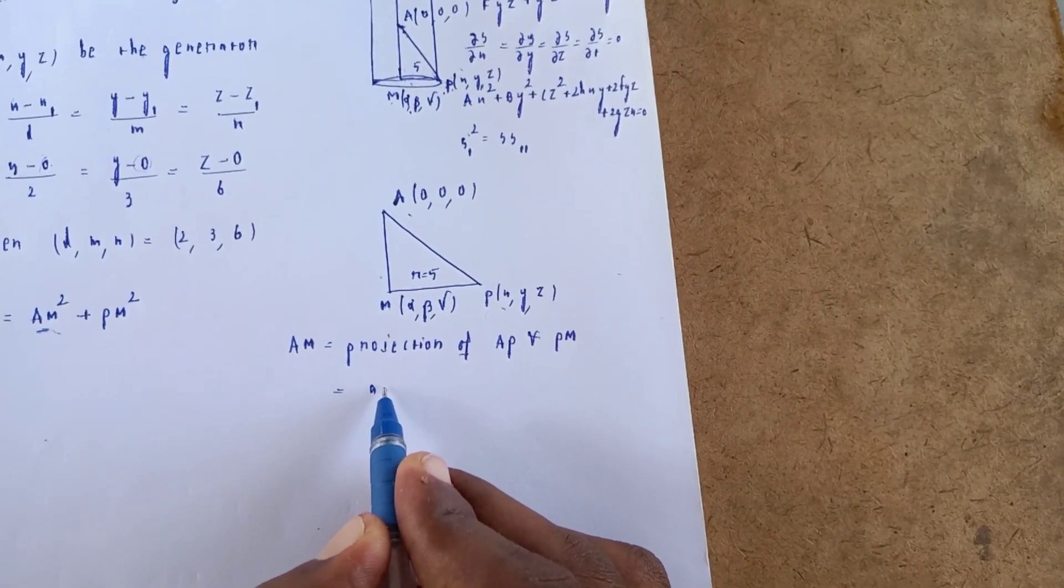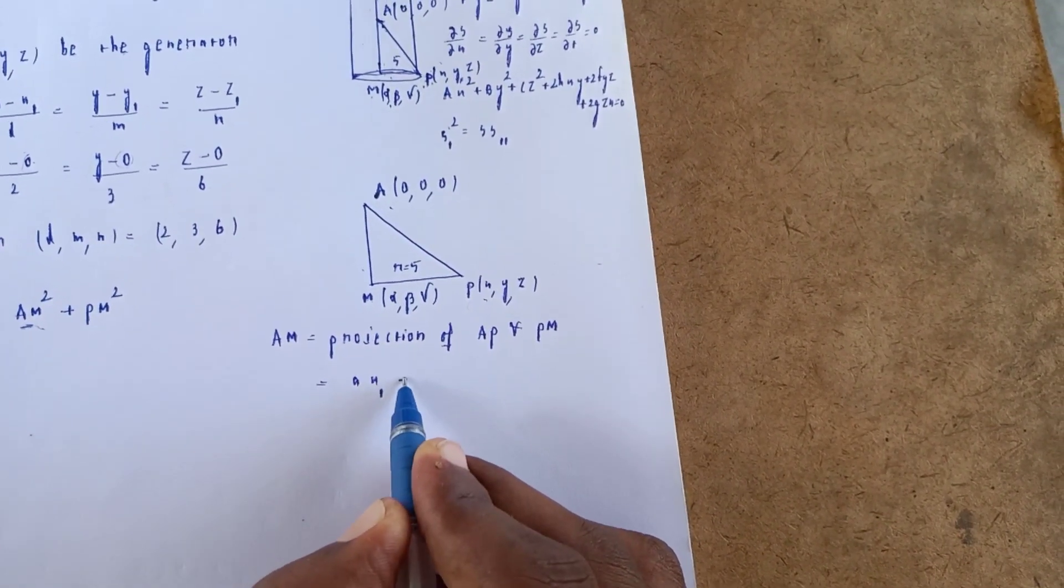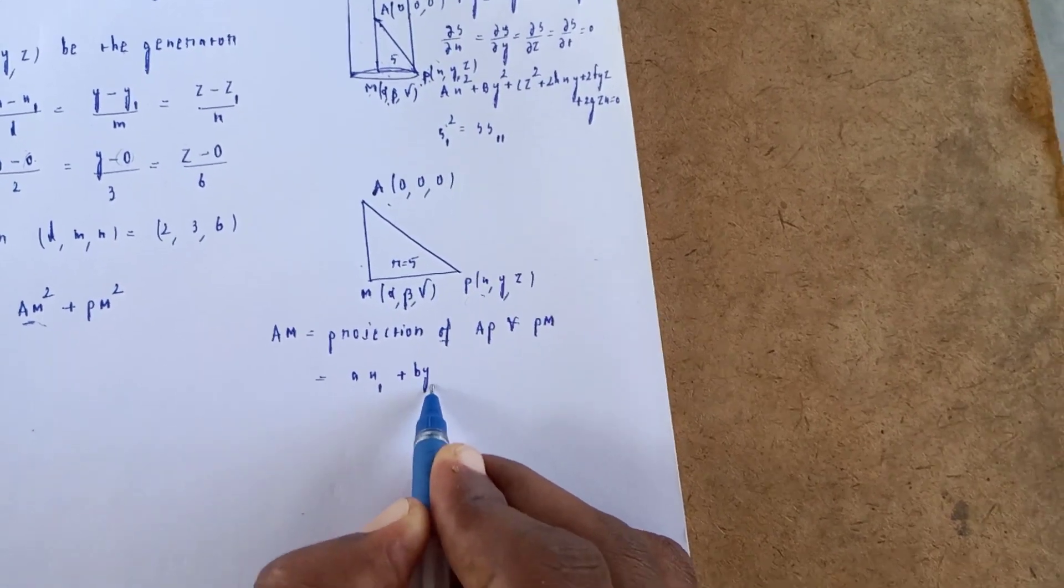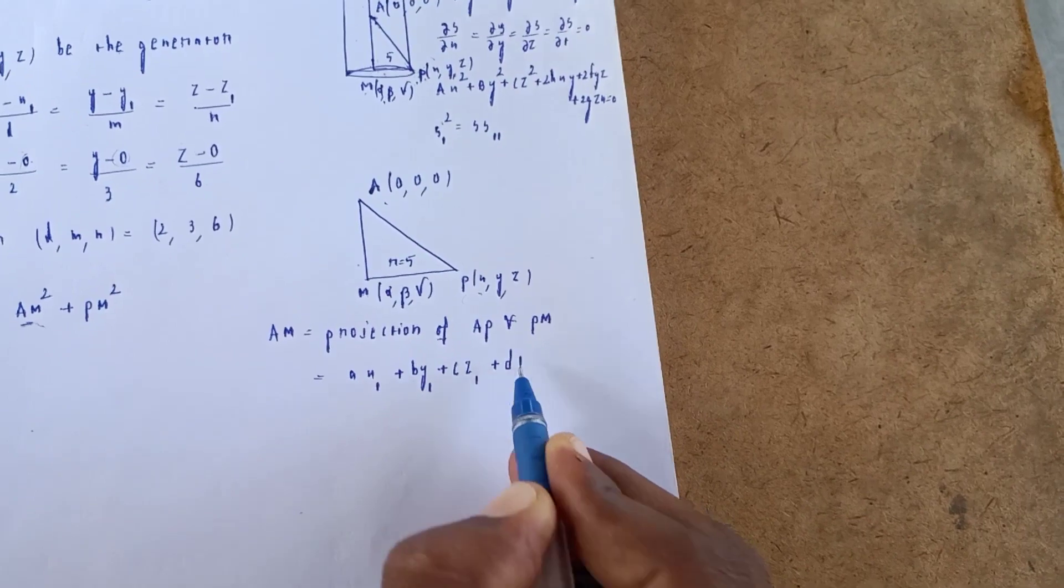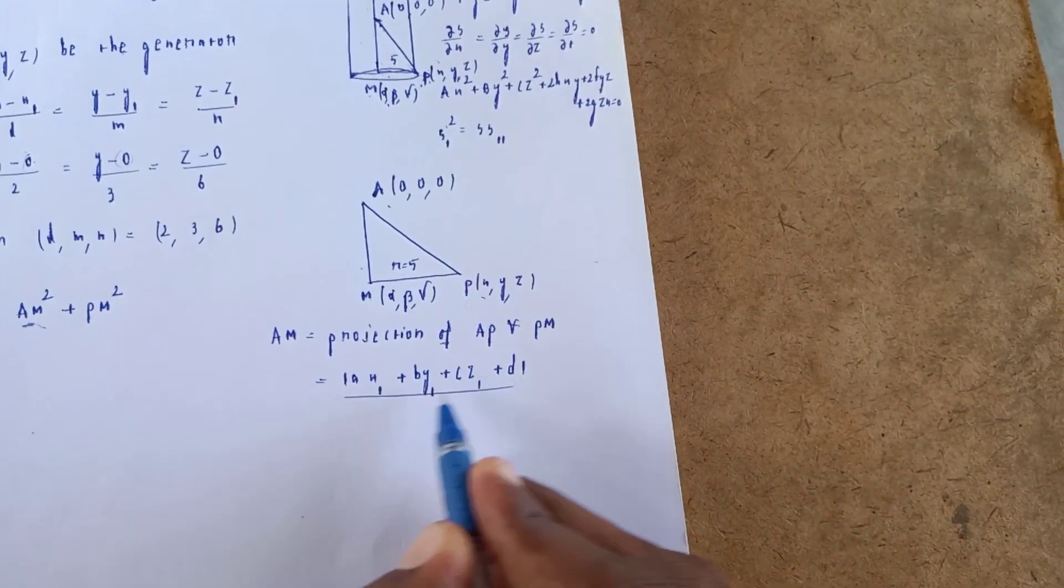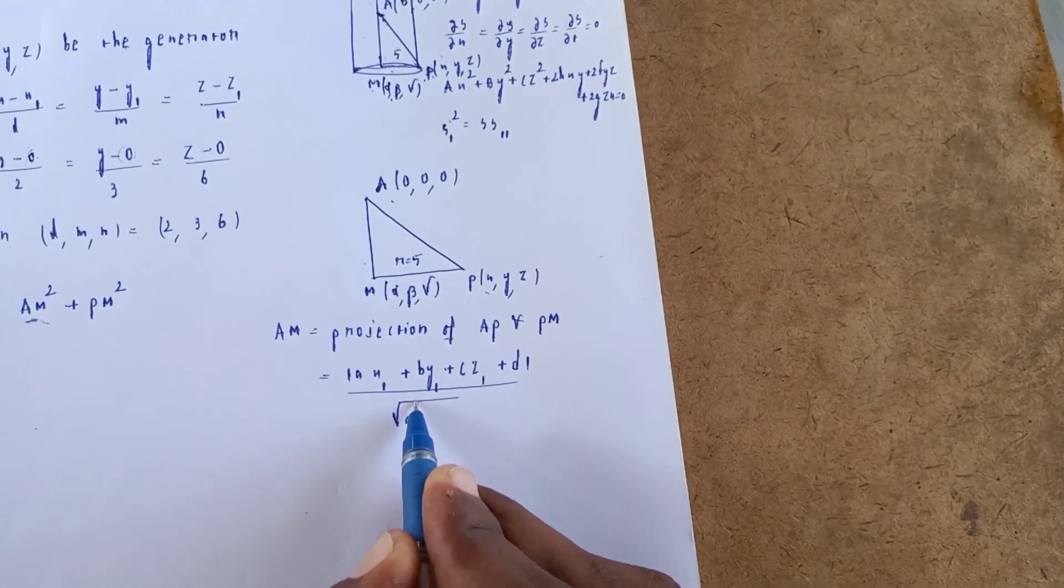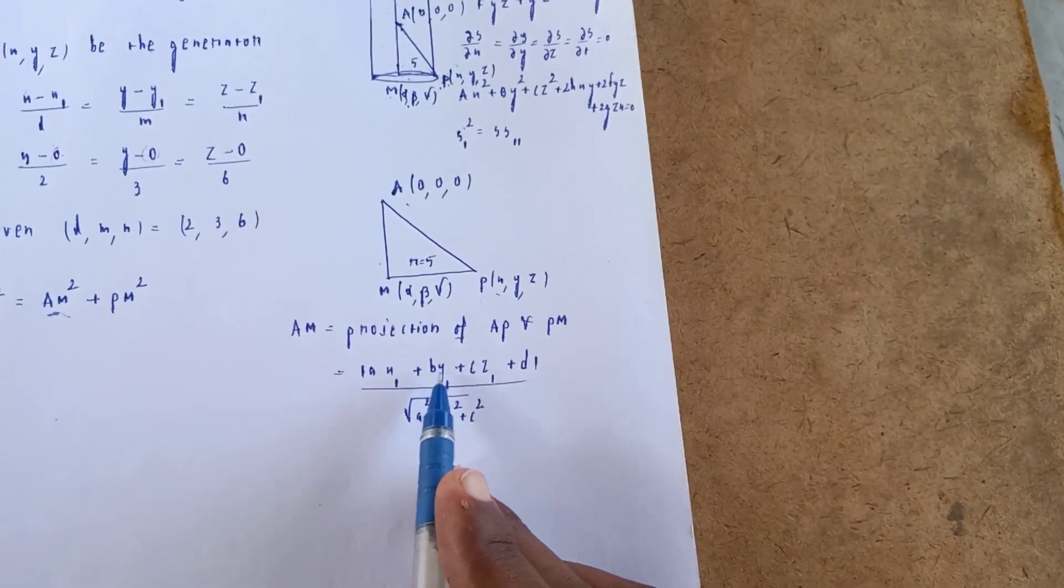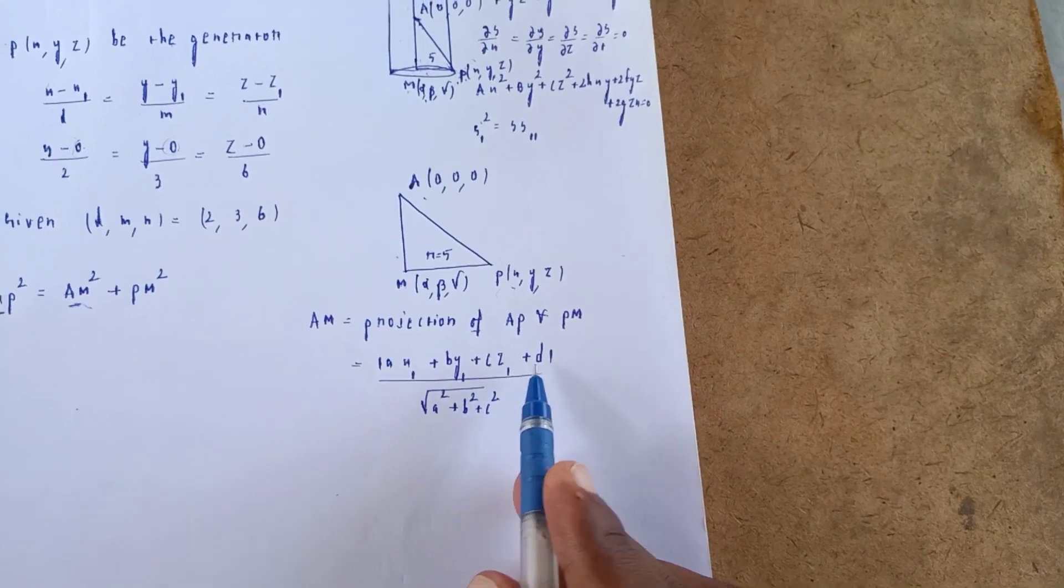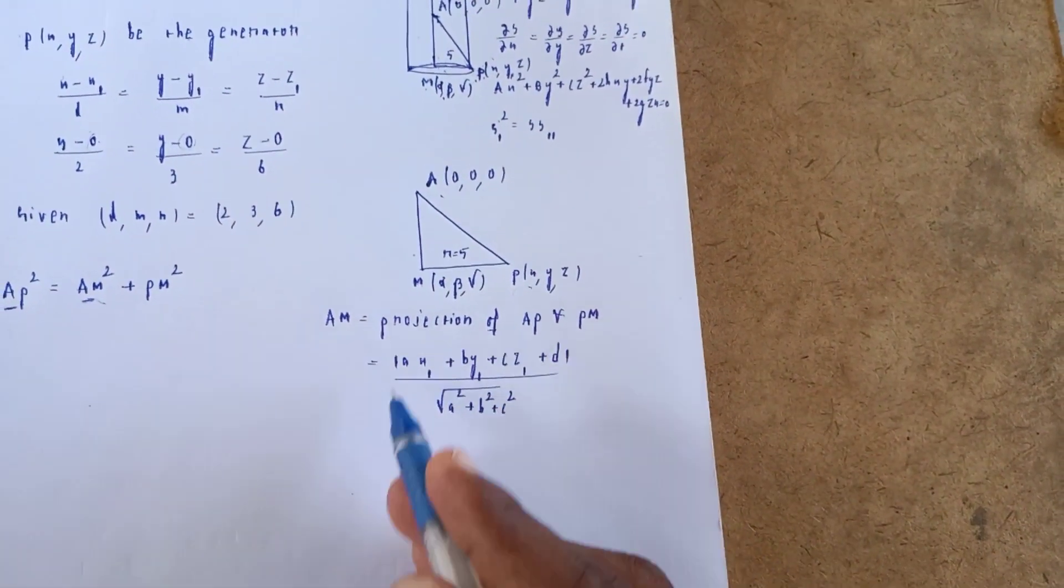The formula for projection is (ax₁ + by₁ + cz₁ + d)/√(a² + b² + c²).